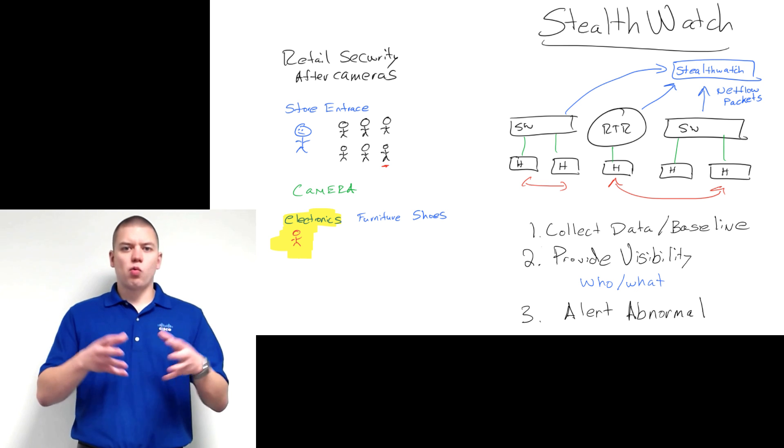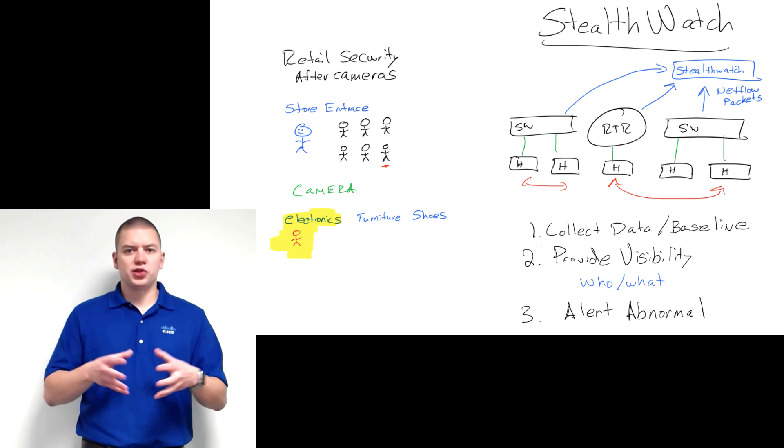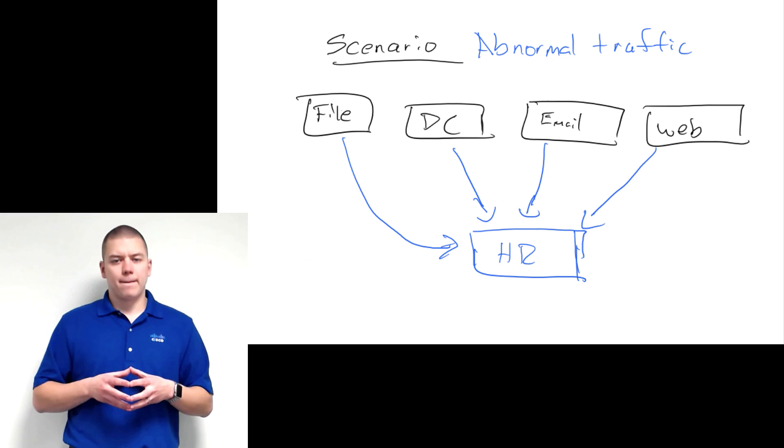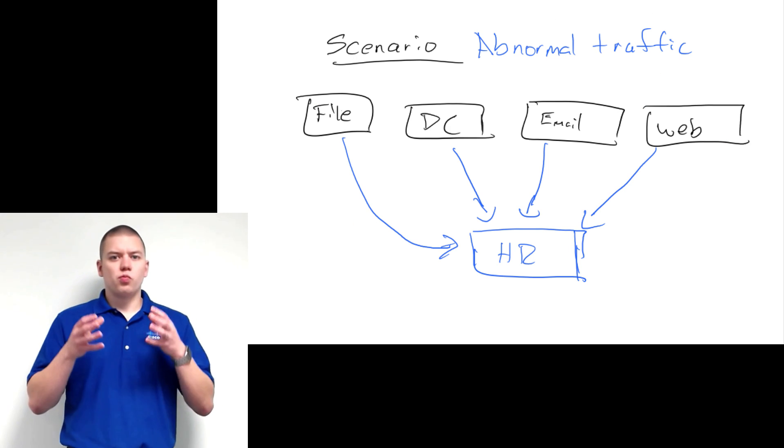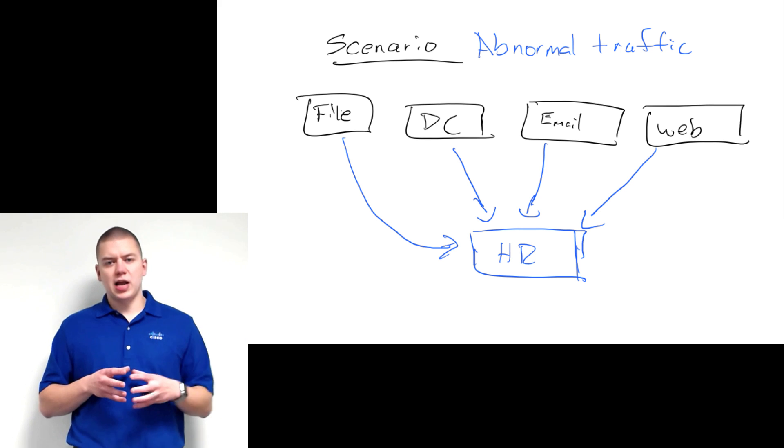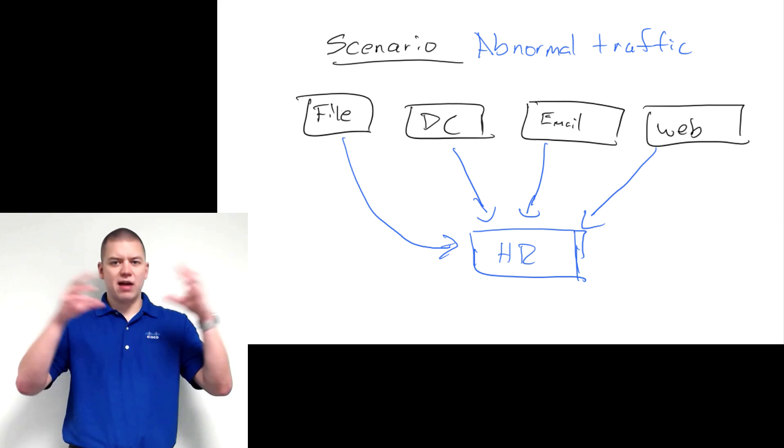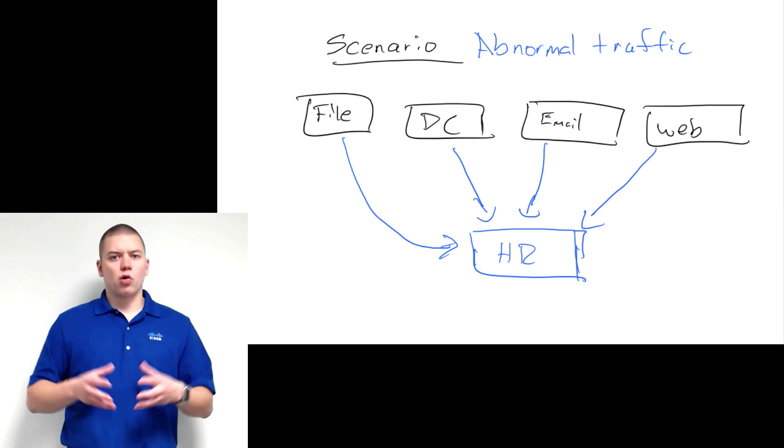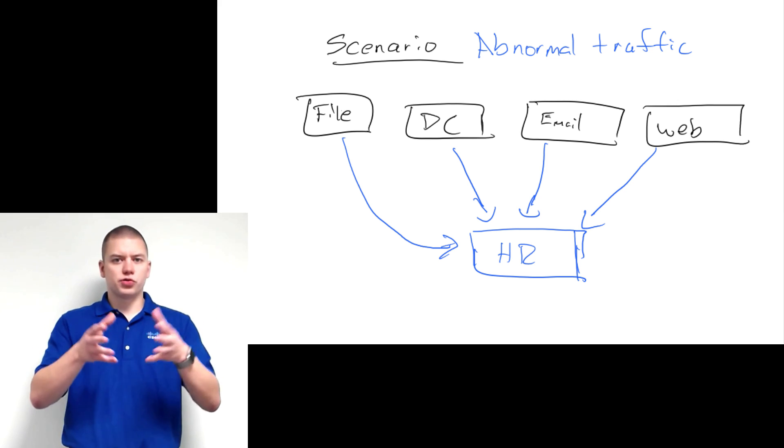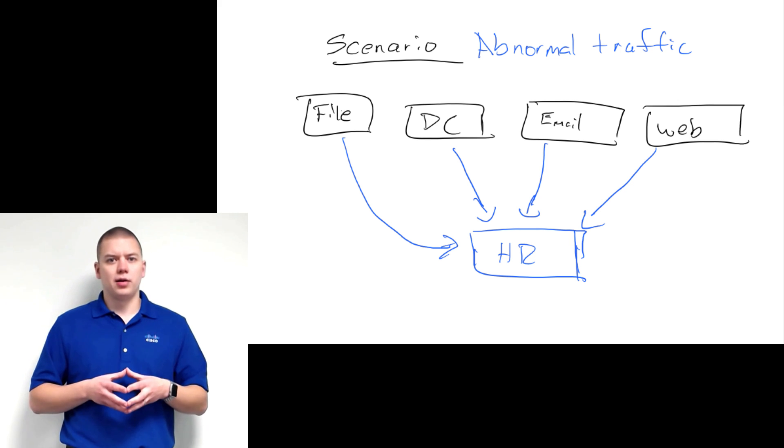When StealthWatch sees any sort of abnormal or malicious activity, we alert you on that. A perfect example is an HR user. We know that HR typically only logs into HR servers during the day. All of a sudden, we see HR logging into every server in the environment and pulling down data. We know that's abnormal, so we alert you, and you can drill in, see something malicious is going on, and shut it down.